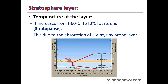The temperature in the Stratosphere increases gradually from −60°C at its beginning until it reaches 0°C at its end (Stratopause). This is due to the absorption of ultraviolet rays by the ozone layer, which increases the temperature of this layer.